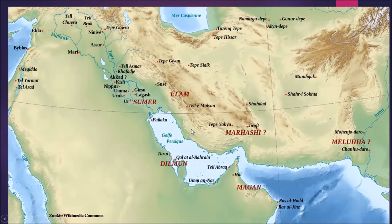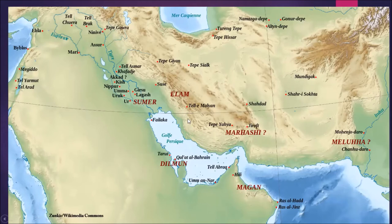The Akkadian empire also traded with Meluha, which is the modern-day Indus Valley civilization. You can see Mohenjo-daro and Chanu-daro here, important sites in the Indus Valley, with the Indus River flowing through. Further south were Indus Valley sites like Lothal in Gujarat, and in the north, the important site of Kalibangan in Haryana. So the Akkadian empire traded with Meluha (Indus Valley), with Dilman (modern Bahrain), and controlled the entire fertile crescent.